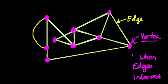They can form when edges intersect. So for example, here's an edge coming this way. Here's one coming this way. They meet here, and we form a vertex.